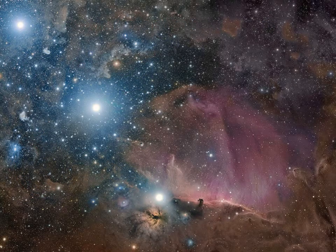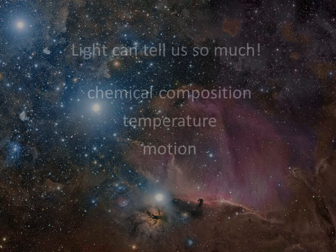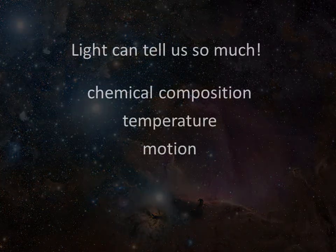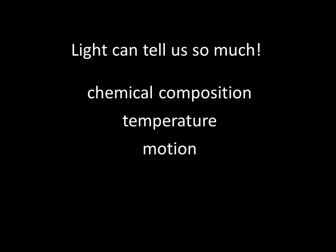Almost everything we know about the universe comes from a careful analysis of light. We may not be able to bring a star into an earthly laboratory for measurement, but using the light it emits, we are able to determine chemical composition, temperature, and motion. And now you know how it's done! That's it for chapter 5 — you really deserve a treat for working through all of this, so get yourself a mocha or even a cookie or two!